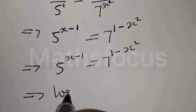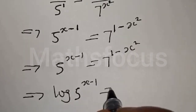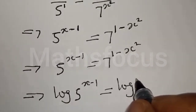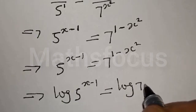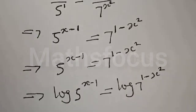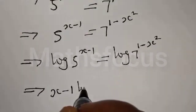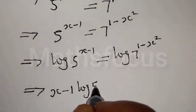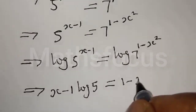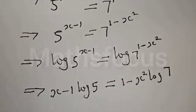We have log of 5 raised to power x minus 1 equal to log of 7 raised to power 1 minus x squared. So we have x minus 1 times log 5 will be equal to 1 minus x squared times log 7.